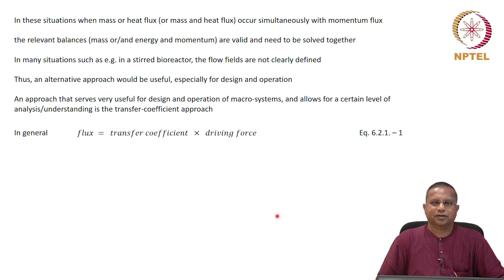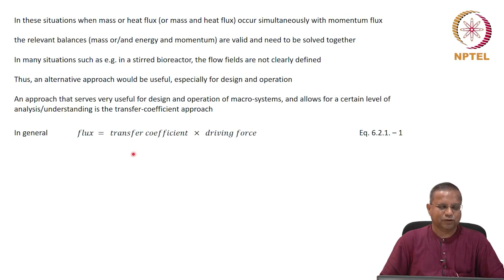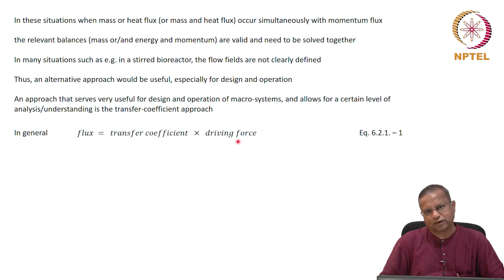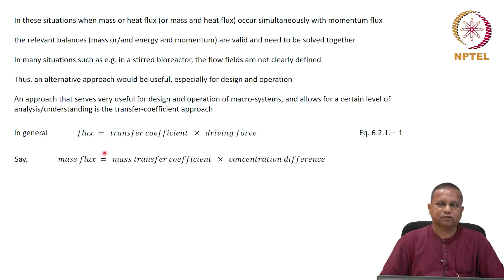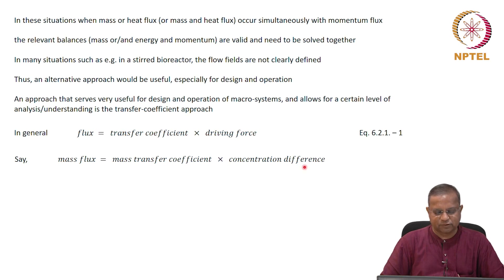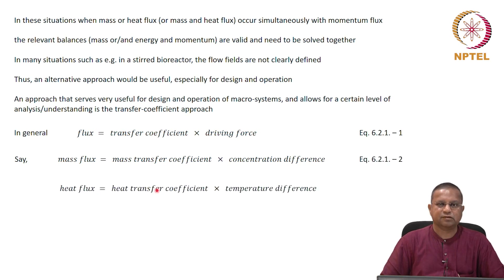Welcome back. In the last class, we looked at flux being expressed as the product of a certain transfer coefficient times a certain driving force. This driving force was the difference in amounts rather than the gradient of that amount. For example, the mass flux was given as a product of the mass transfer coefficient and the concentration difference, and heat flux was given as the product of the heat transfer coefficient and the temperature difference.